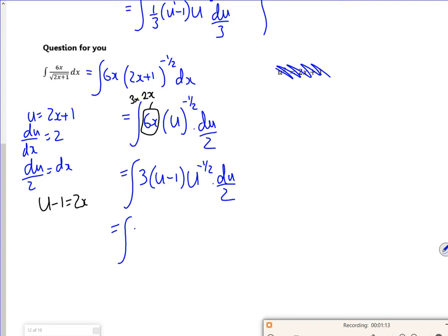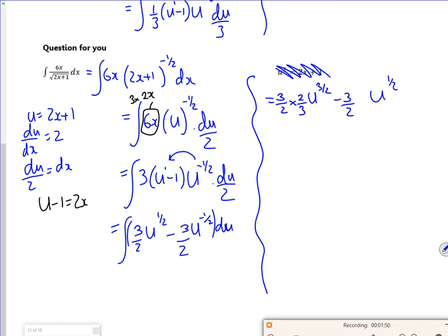I've got 3 divided by 2, and I've got u to the 1 times u to the minus 1 half. So I've got 3, well, I've got 3 times u to the 1 half, minus 3 times u to the minus 1 half divided by 2, plus c.